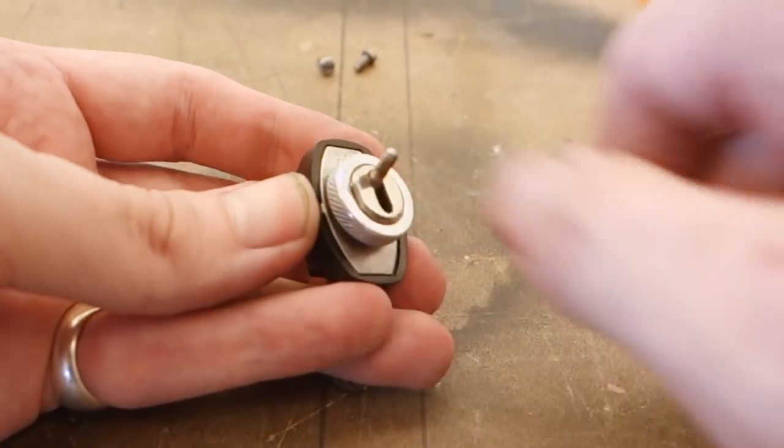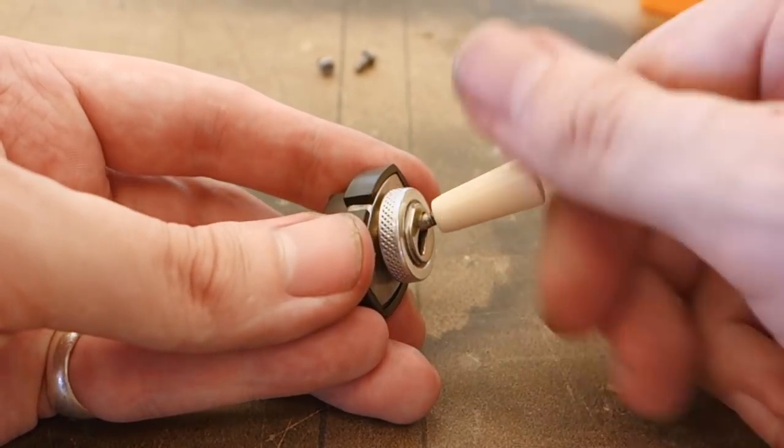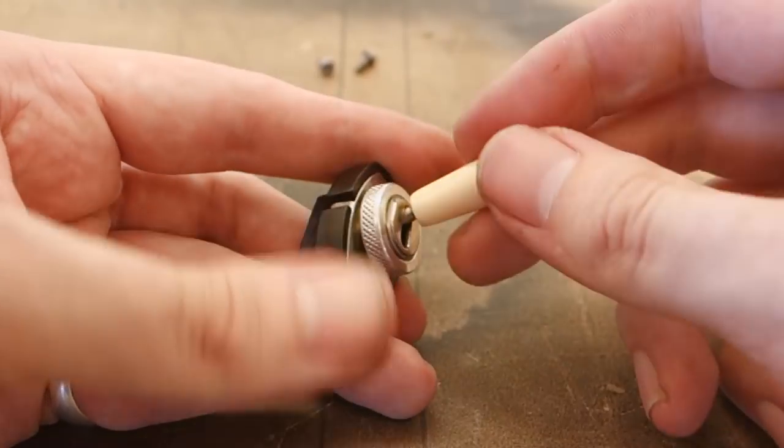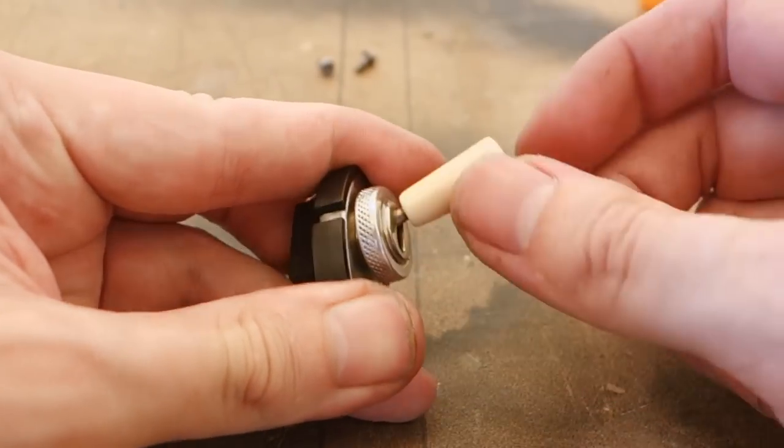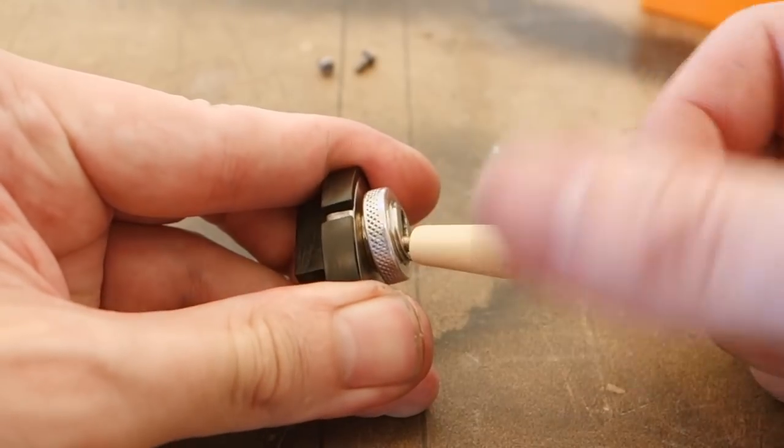If for any reason you lost track of what goes where inside the switch, it can be a really good idea to take some photos as you're disassembling to reference now during the reassembly phase.